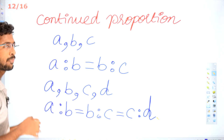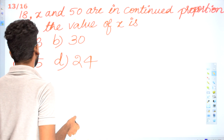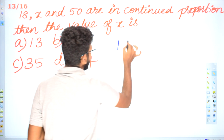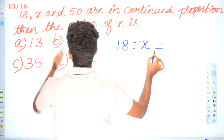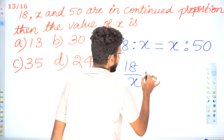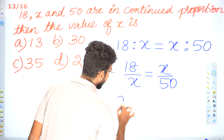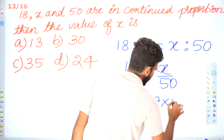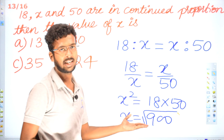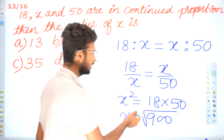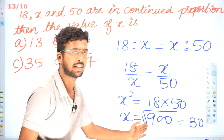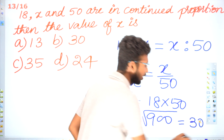This is based on problems. First question: 18, X and 50 are in continued proportion. So 18 is to X is equal to X is to 50, which is nothing but 18 divided by X is equal to X divided by 50. Therefore X squared is equal to 18 into 50, which is 900. X is the root of 900 — root of 9 is 3, root of 100 is 10 — which is nothing but 30. So 30 is the answer.